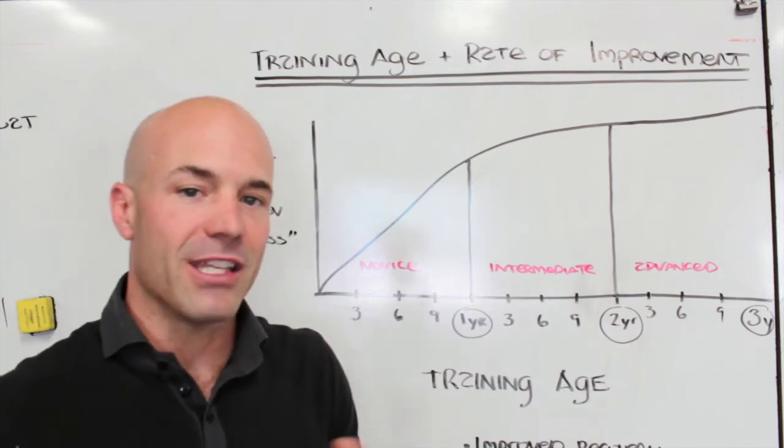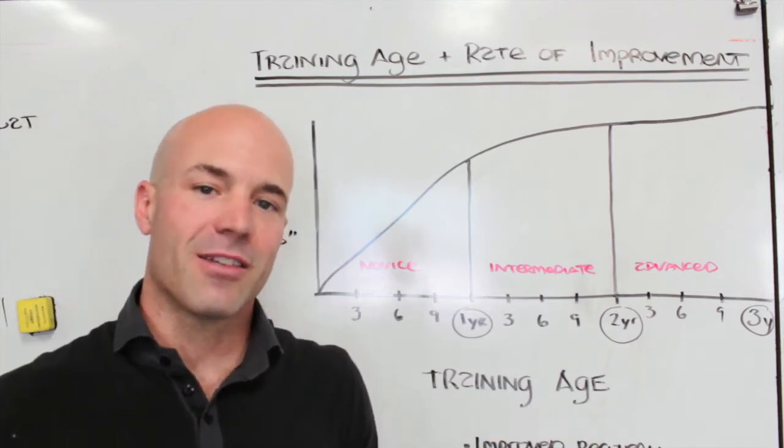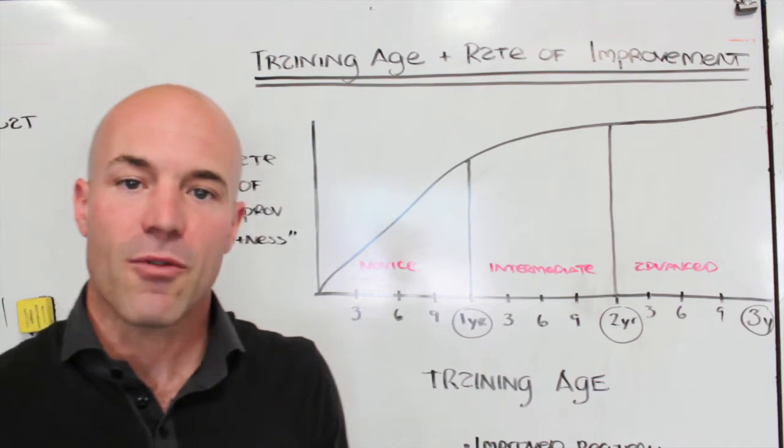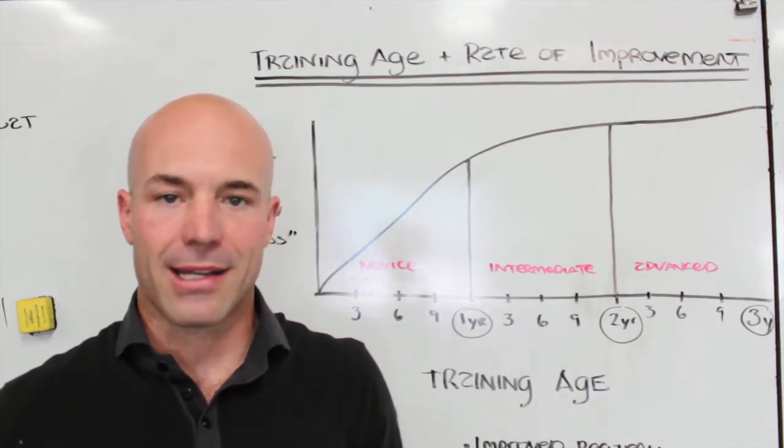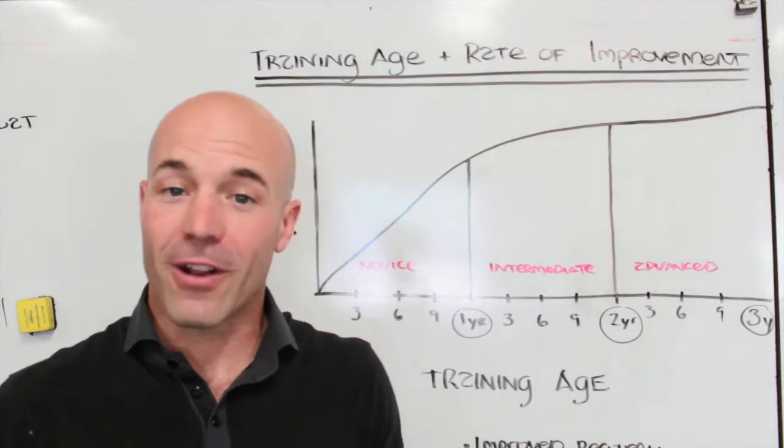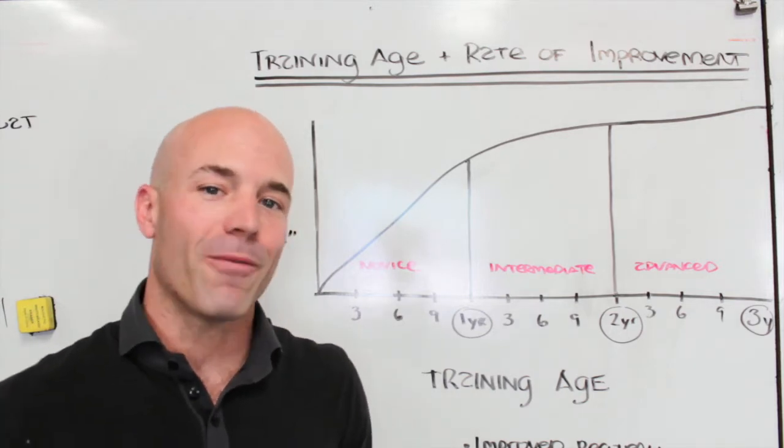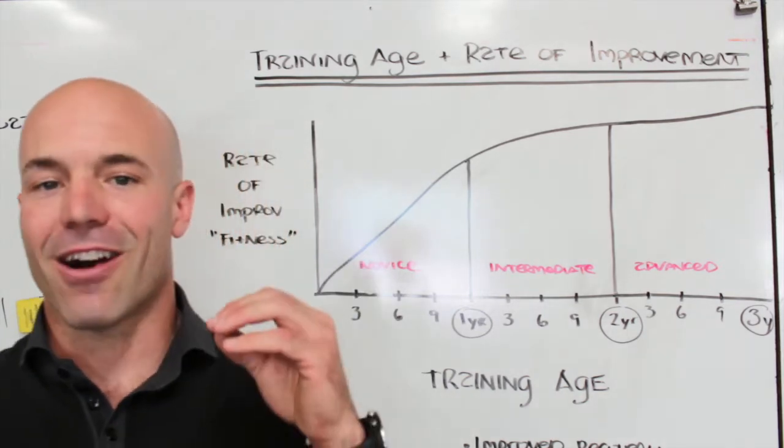So a lot of athletes who've been here now at that year to two year mark, they're accustomed to having 20, 30 pound jumps every time we do a new strength cycle and every time we retest our one rep maxes. All the coaches in this gym are very experienced athletes. And for us, we go up five to 10 pounds. It is awesome. We are stoked.